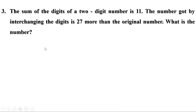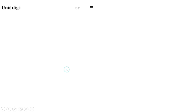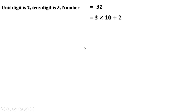Next problem: the sum of the digits of a two-digit number is 11. The number obtained by interchanging the digits is 27 more than the original number. What is the number? Suppose the unit digit is 2 and tens digit is 3 — the number is 32, meaning 3 tens and 2 units, which is 3 into 10 plus 2. When unit digit is 5 and tens digit is 7, the number is 75, or 7 into 10 plus 5.